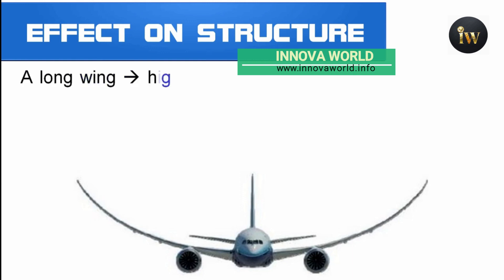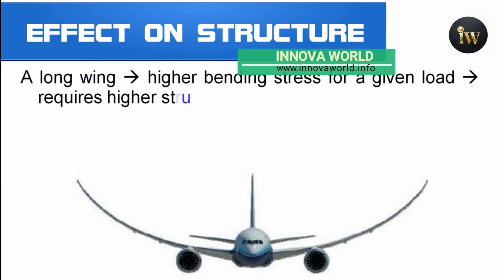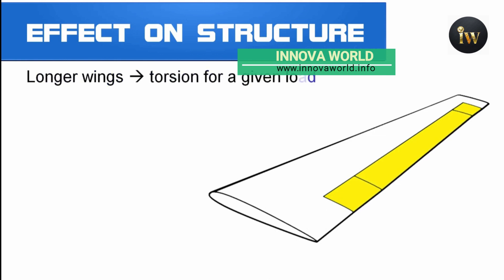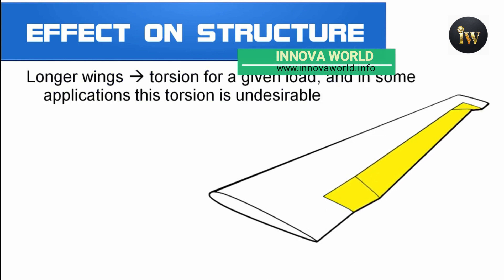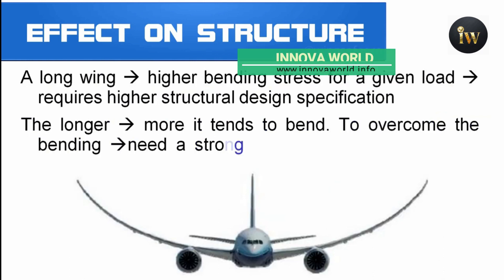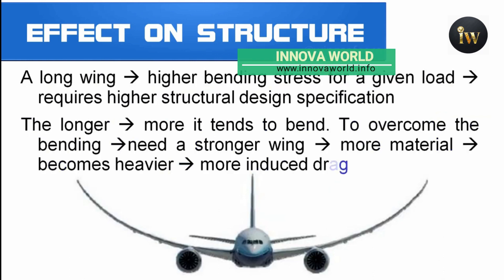Regarding effects on structure, a long wing has higher bending stress for a given load than a short wing, and therefore requires a larger or higher strength structural design specification. Longer wings may also have some torsion due to a given load, and in some applications distortion is undesirable.